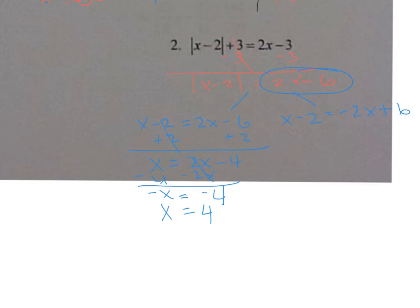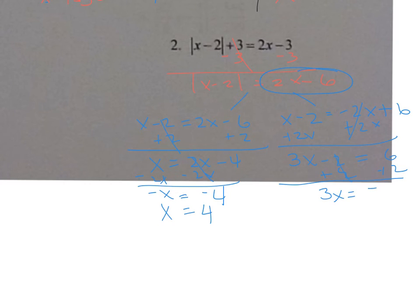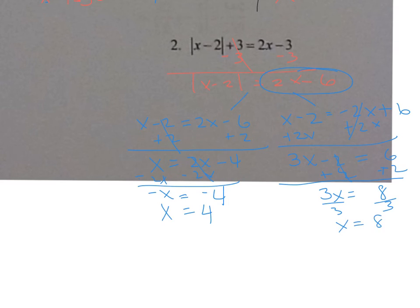For the inverse equation: x minus two equals negative two x plus six. Add two x to both sides: three x minus two equals six. Add two: three x equals eight. Divide both sides by three: x equals eight thirds.